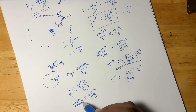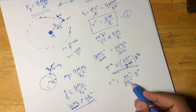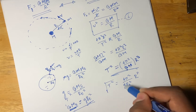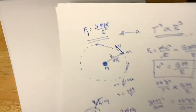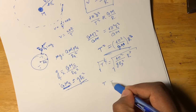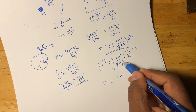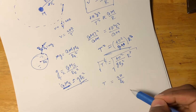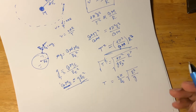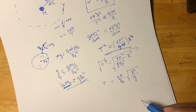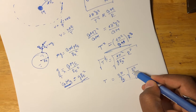And once you have the mass of the Earth and the radius, you can take the square root of the formula and calculate the time period. The formula gives the time period as the square root of 4π² times r³ over the acceleration due to gravity times the radius of the Earth squared.